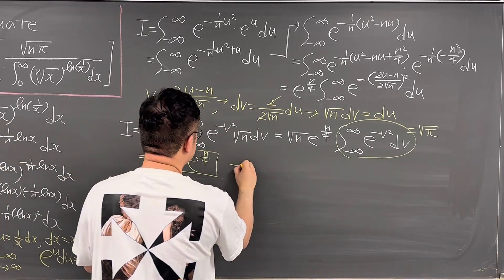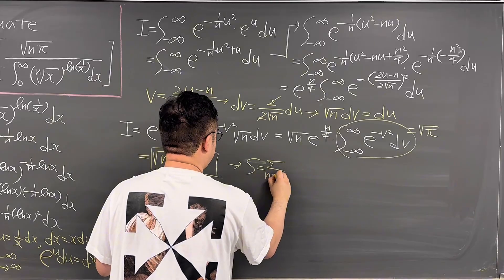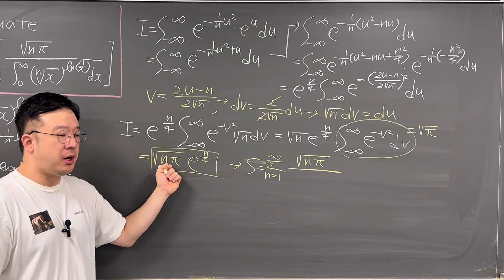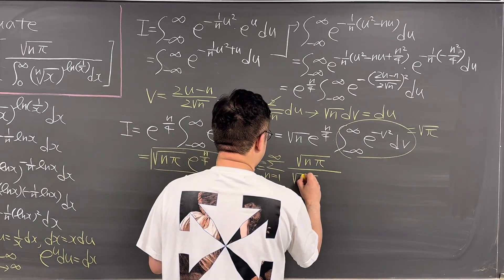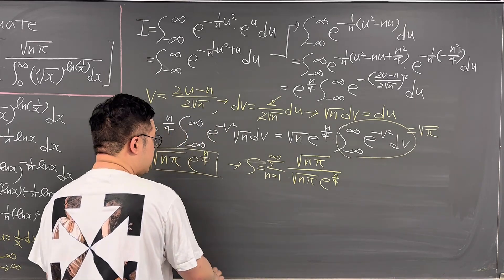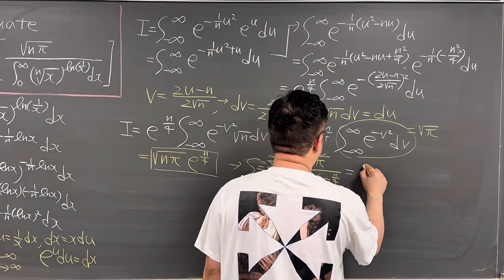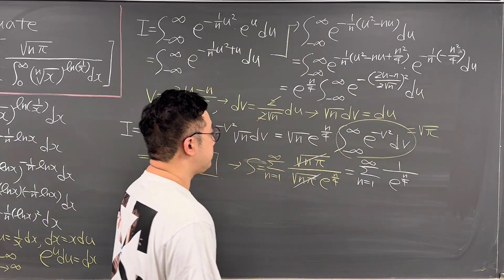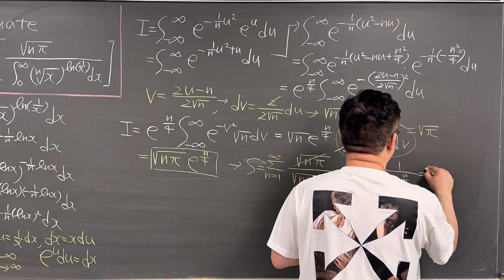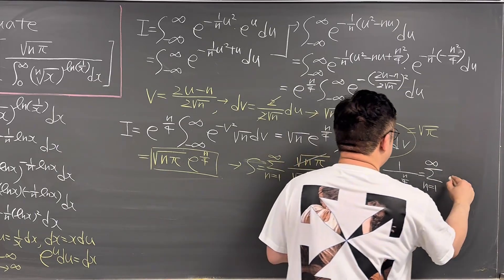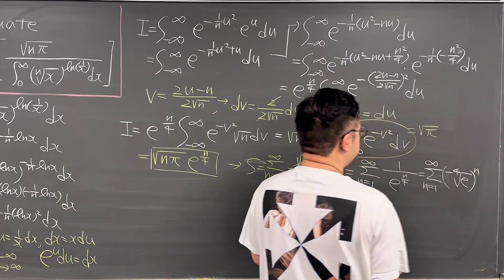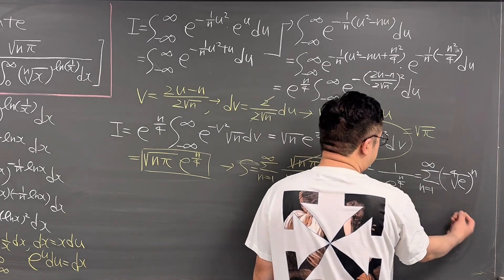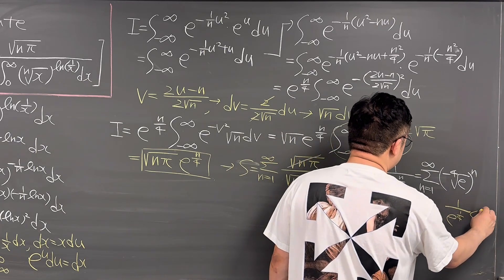Now we go back to the summation. The summation from n equals 1 to infinity of square root of n*pi divided by I. The denominator turns out to be square root of n*pi times e to the power of n/4. So the square root of n*pi cancels out, leaving the summation from n equals 1 to infinity of 1 over e to the power of n/4. We can rewrite this as the summation from n equals 1 to infinity of the fourth root of e to the power of negative n. The common ratio 1 over e to the power of 1/4 is less than 1, so the geometric series converges.